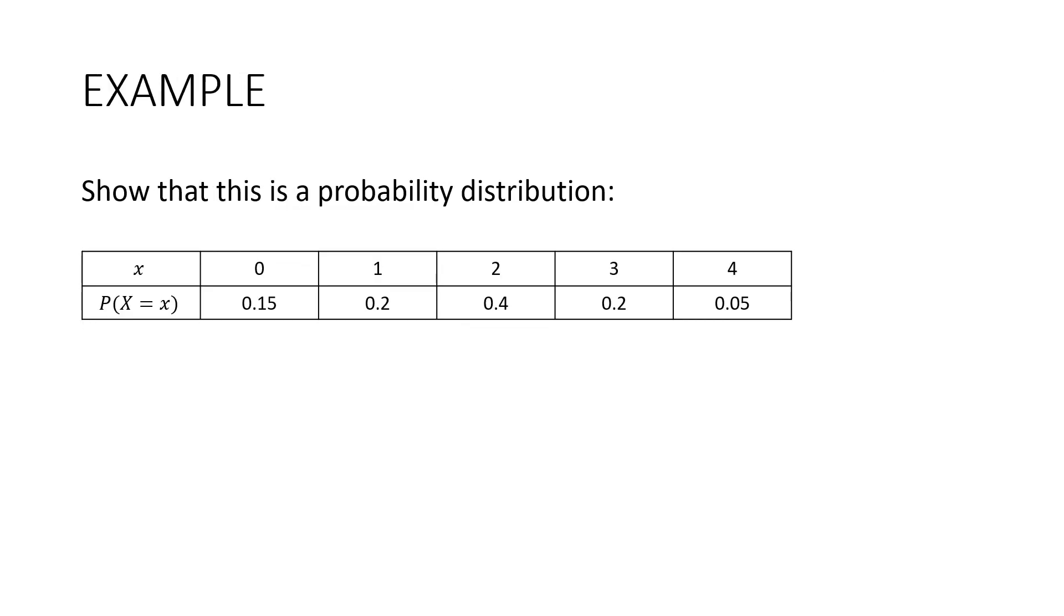So this is a really common question. Show that this is a probability distribution. How are we going to do that? All of these probabilities have to be in between 0 and 1. They are. And they have to total 1. So we've just got to add up 0.15, 0.2, 0.4, 0.2, and 0.05. And they do equal 1, and so it is a probability distribution.